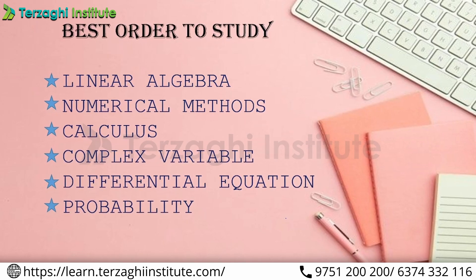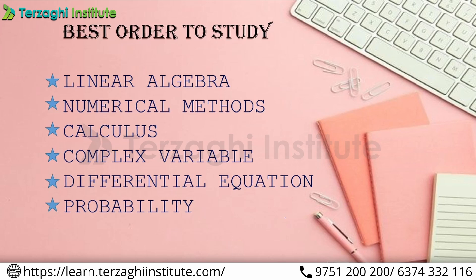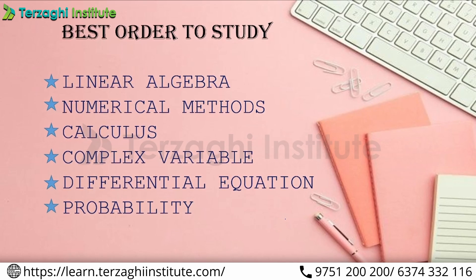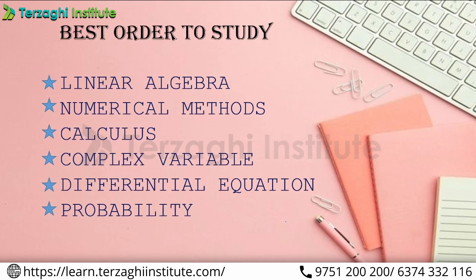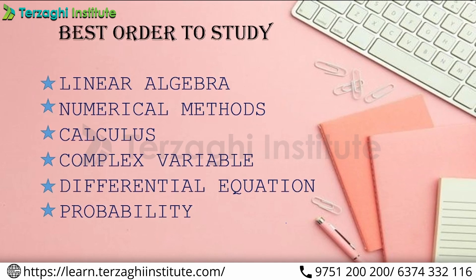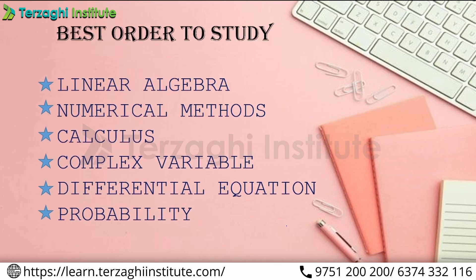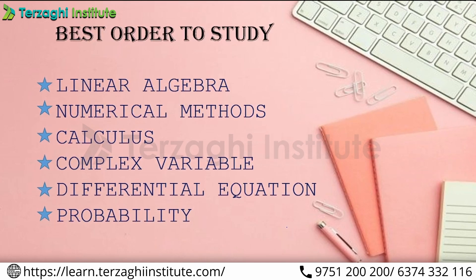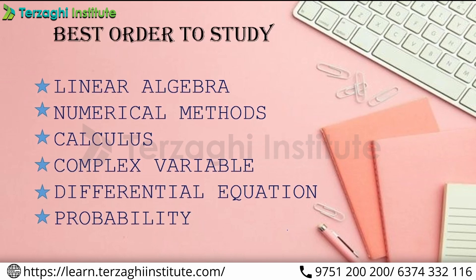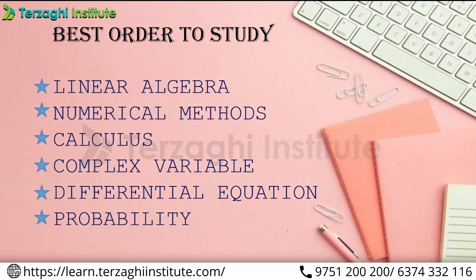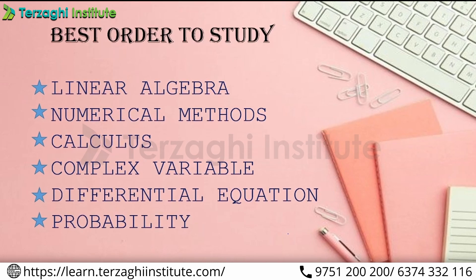For students new to Engineering Mathematics, the recommended study order is: Linear Algebra → Numerical Methods → Calculus → Complex Variables → Differential Equations → Probability. Start with basics of Linear Algebra: types of matrix, properties of matrix, determinants, and fundamentals — then stop at Eigenvalues and properties of determinants. Do not go into conceptual depth — just the basics.